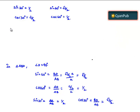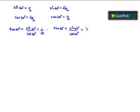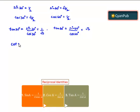Now, let us find the other trigonometric ratios, that is tan first. tan 30 degrees is equal to sin 30 degrees by cos 30 degrees, which is nothing but 1 by 2 divided by root 3 by 2, which is equal to 1 by root 3. And tan 60 degrees is equal to sin 60 degrees by cos 60 degrees. Similarly, cot 30 degrees is nothing but 1 by tan 60 degrees, which is equal to 1 by 1 by root 3, that is root 3. And cot 60 degrees is equal to 1 by tan 60 degrees, which is nothing but 1 by root 3.